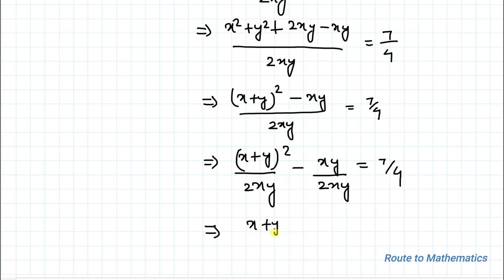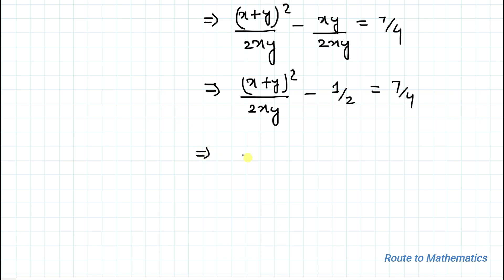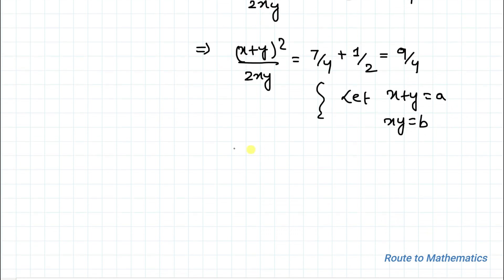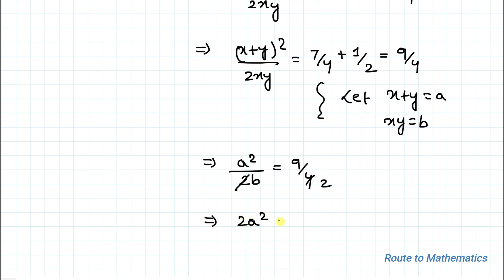This simplifies to (x + y)² / (2xy) = 7/4 + 1/2 = 9/4. Now let's substitute: let a = x + y and b = xy. The equation becomes a² / (2b) = 9/4. Simplifying, 4 and 2 cancel by 2, giving us 2a² = 9b. Let's call this Equation 1a.